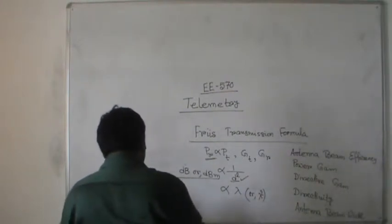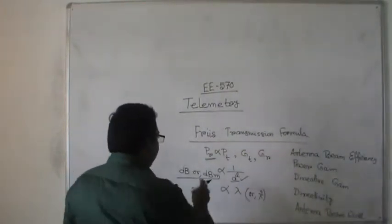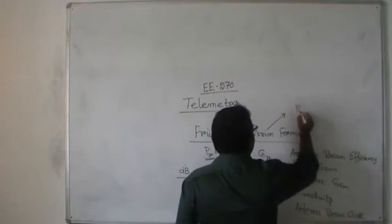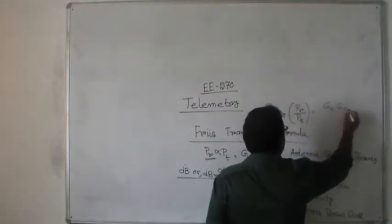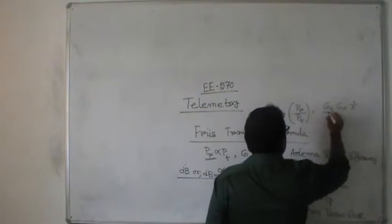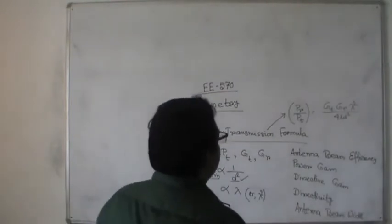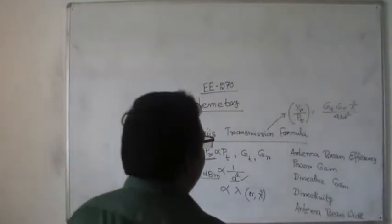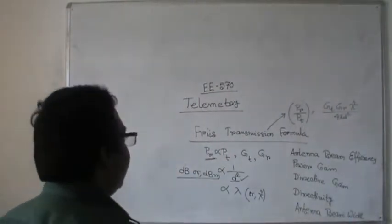So, writing the Friis transmission formula: PR divided by PT equals GT times GR times lambda squared upon 4 pi times r squared. The 4 pi comes because — as I told in the previous lecture — the steradian should be the solid angle for a sphere, and for telemetry, whenever there is antenna wave propagation, we are considering a solid sphere.